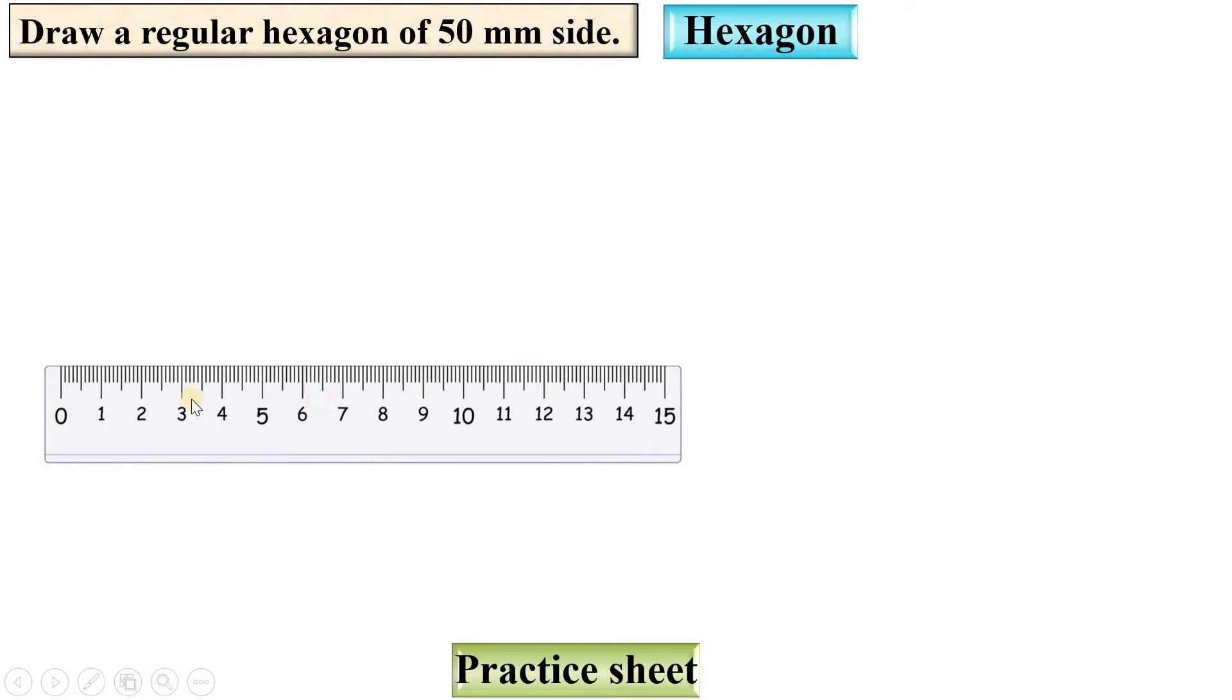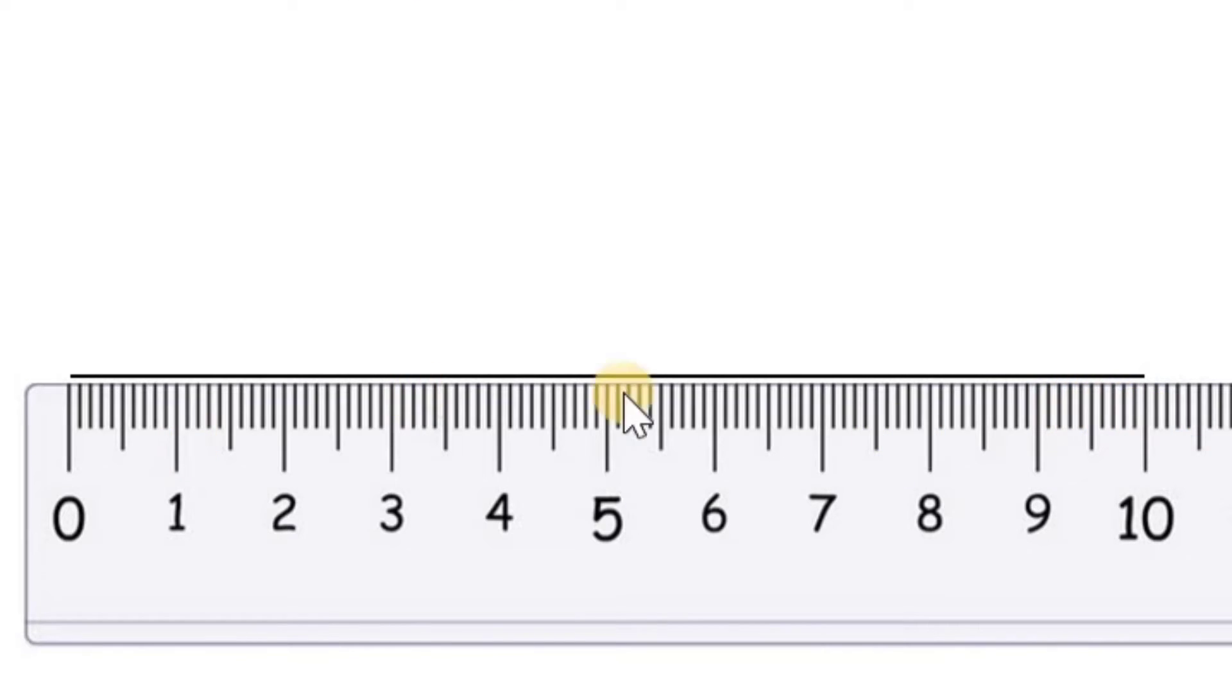First of all take the scale, draw the horizontal line that is exactly equal to double of this side, that means 100 mm. Here you can see 100 mm.